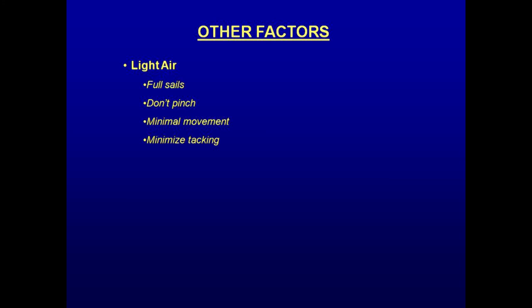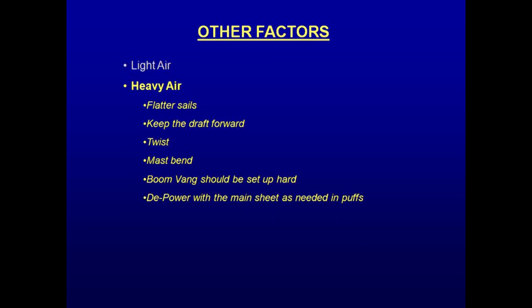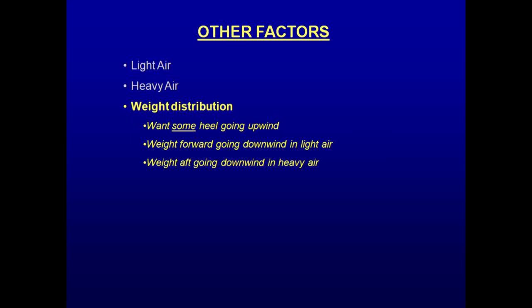In heavy air, the sail should be flatter. The draft should be kept forward by the use of higher tension and cunningham. Make sure that the sails have sufficient twist, especially in higher wind speeds. Mast bend can be used to help flatten the mainsail. Leave the boom vang set up hard, and depower the main using the mainsheet or the traveler as required when puffs hit. You always want some heel when going upwind. In light air, the crew may need to move to leeward. Going downwind, keep the weight forward in light air and aft in heavy air.